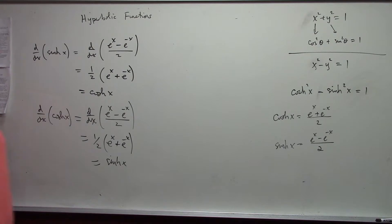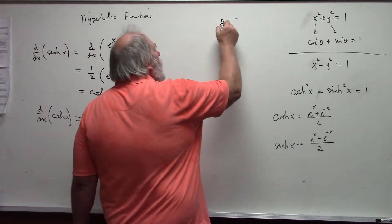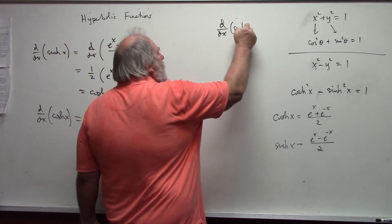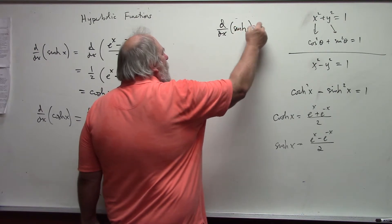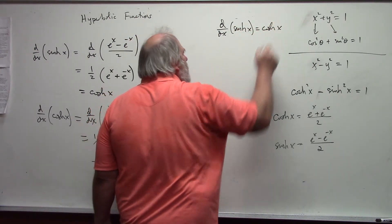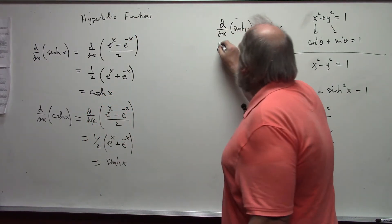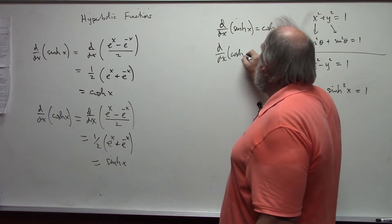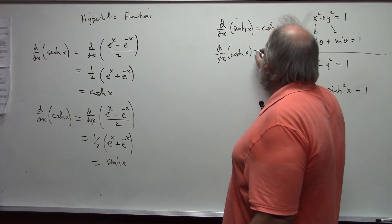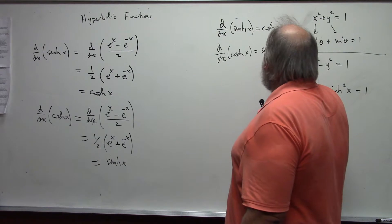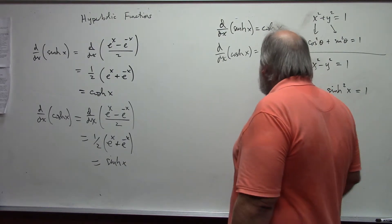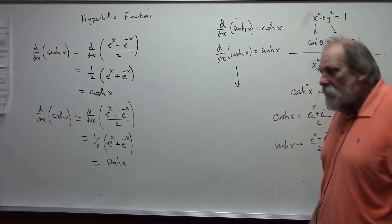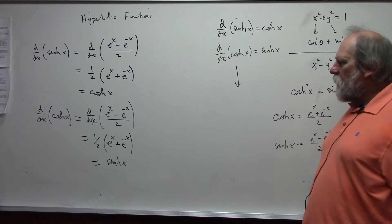So the derivative of sinh of x is cosh of x. The derivative of cosh of x is sinh of x. For the other hyperbolic derivatives, you can use the quotient rule, just like we did with the regular trig derivatives.